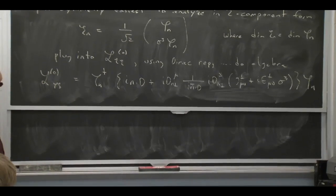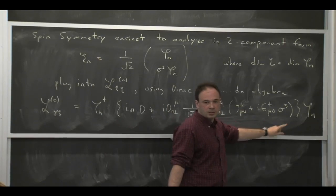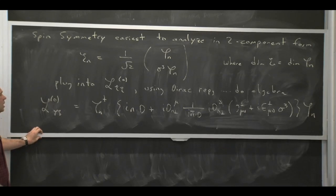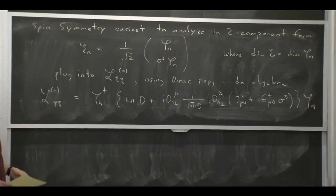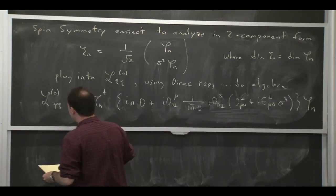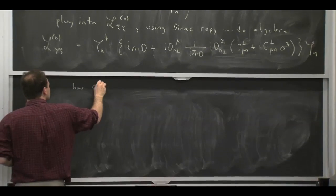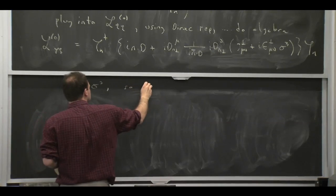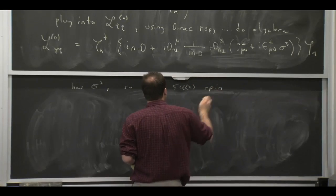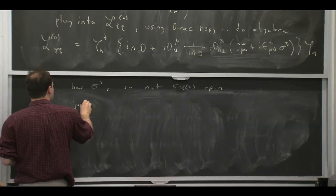So it's almost independent of spin, but not quite. There's a sigma 3 sitting there. If sigma 3 wasn't there, it'd be like HQET, where you'd have an SU2 symmetry. The fact that sigma 3 is there means you don't have an SU2 symmetry. And really, all you have is a U1 symmetry.